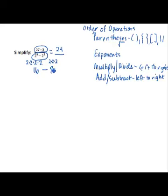We have 16 minus 8, and that is what we need to simplify to get our denominator answer. 16 minus 8 is 8. So we have a numerator value of 24, a denominator value of 8.